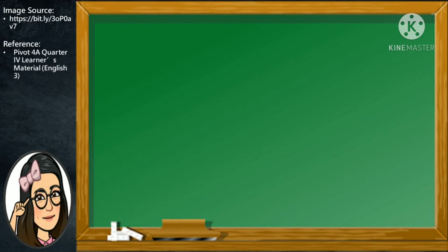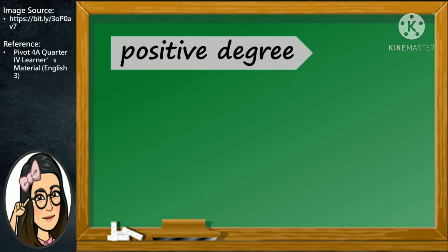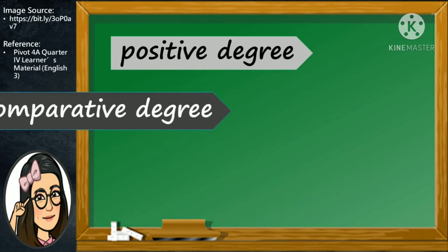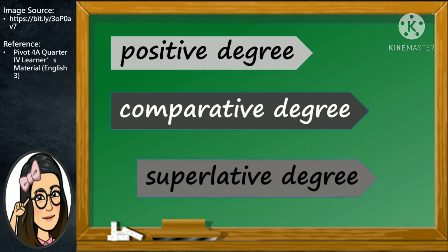Adjectives have three degrees of comparisons. These are the positive degree, comparative, and superlative degree.